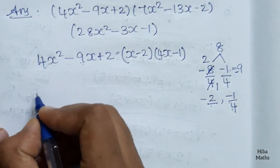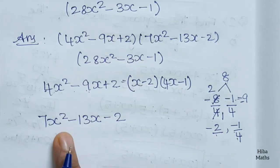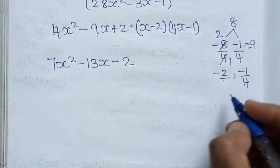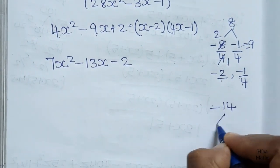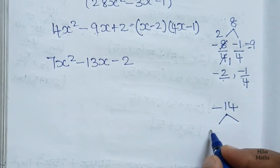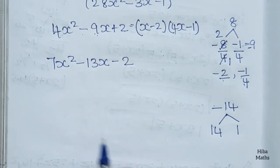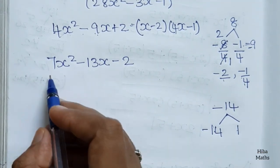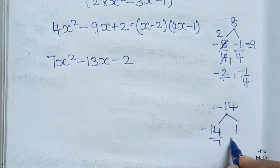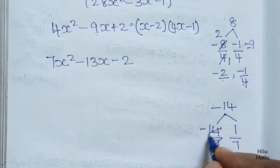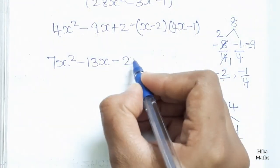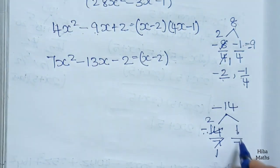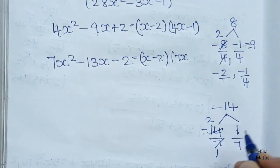Similarly for 7x² minus 13x minus 2: multiply 7 times 2 equals 14. We need minus 14. The split is 7 times 1 and 2 times — giving minus 14 and plus 1. So the roots are minus 2 and 1 by 7, giving factors (x minus 2)(7x plus 1).